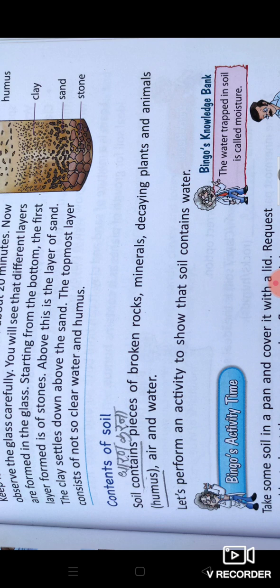Soil contains trees, plants, humus, air, and water. These are all things that we have in soil.